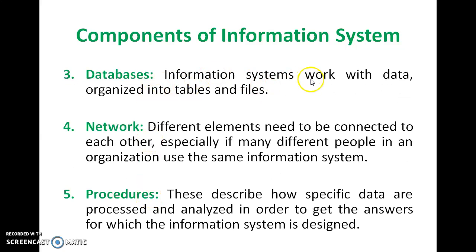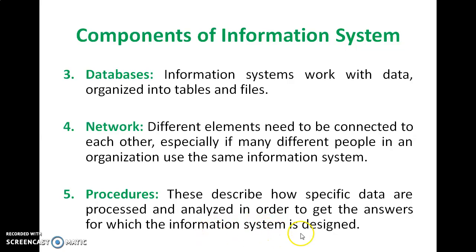Databases — data is stored in the form of tables and files. Network — different elements need to be connected to each other, especially if many different people in an organization use the same information system. Procedures — these describe how specific data are processed and analyzed in order to get the answer for which the information system is assigned.